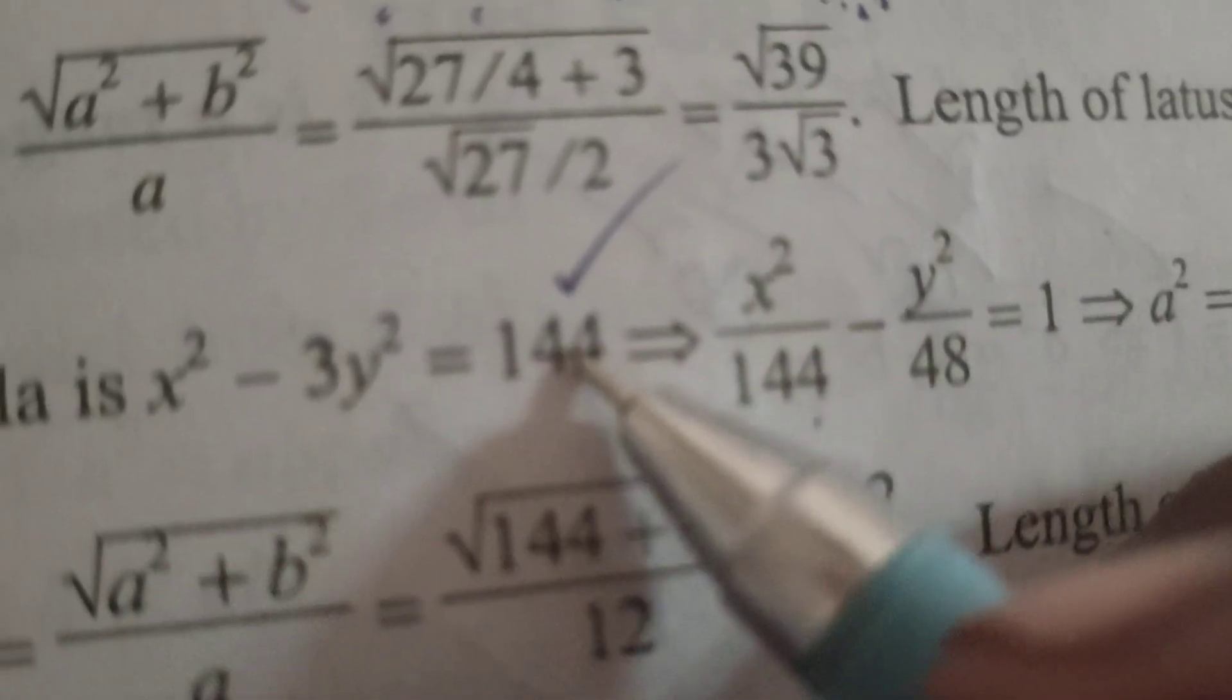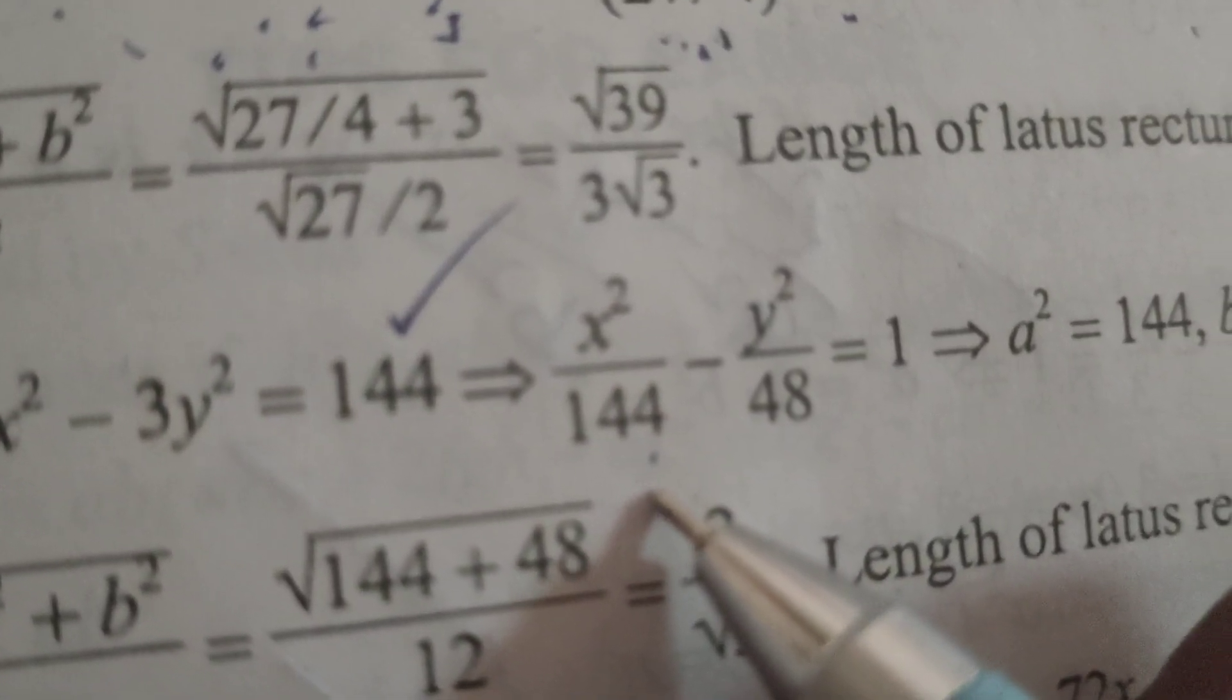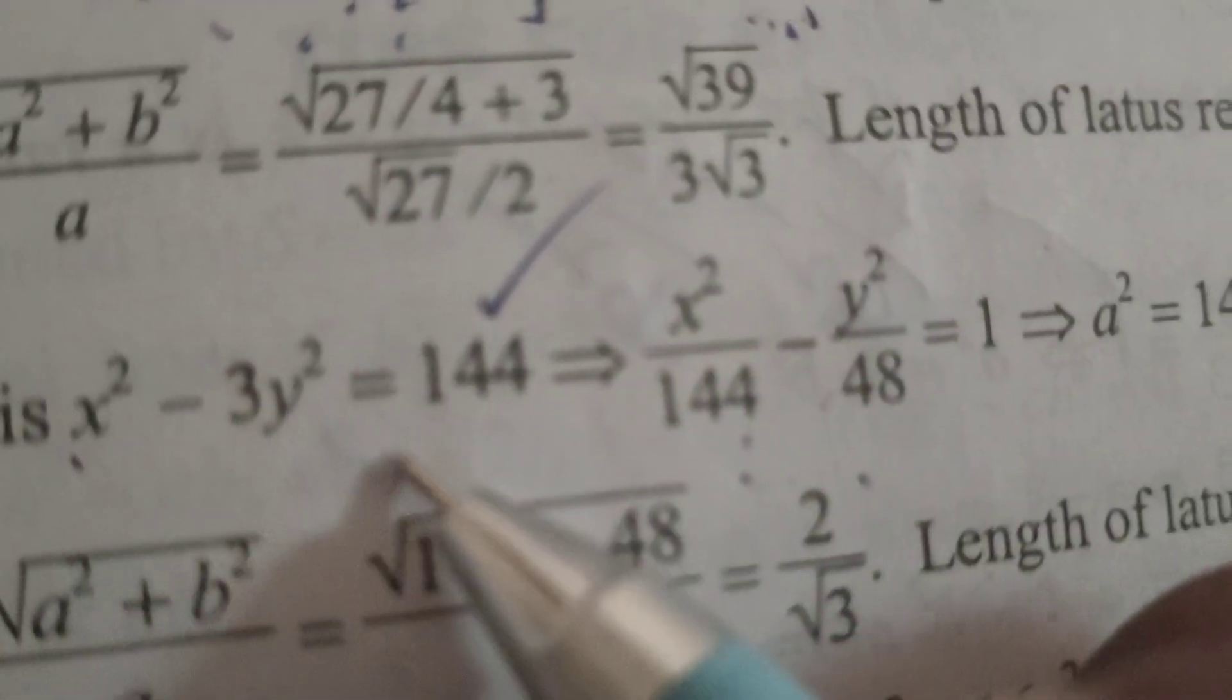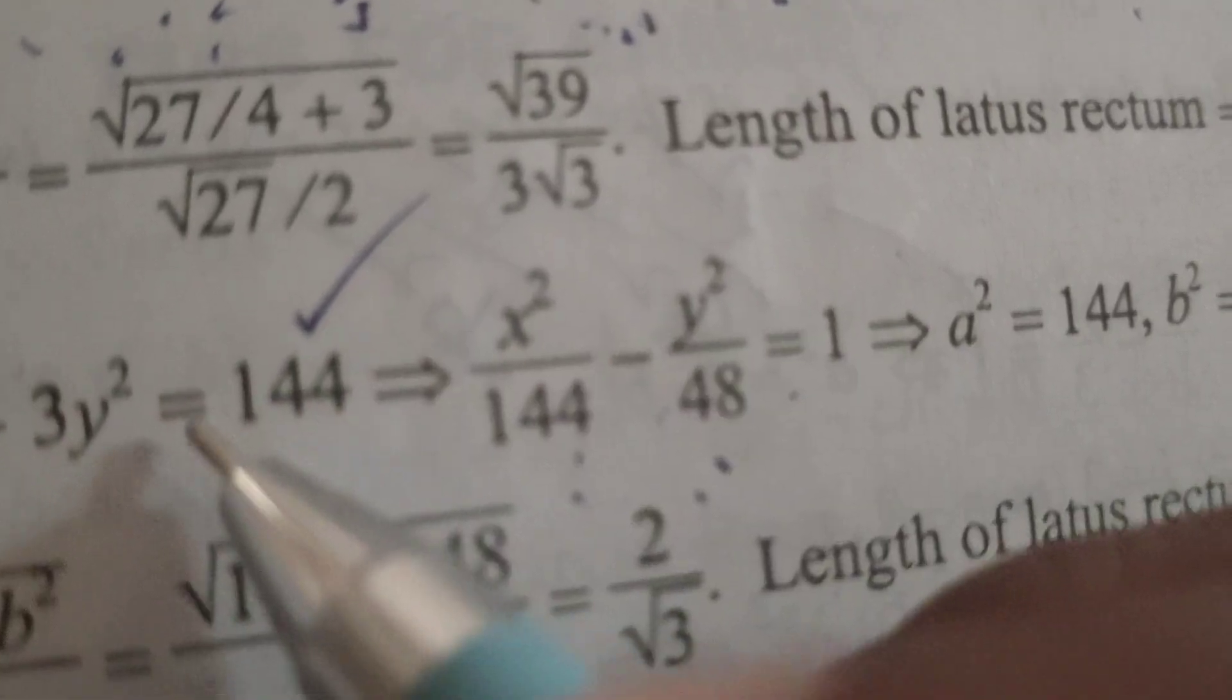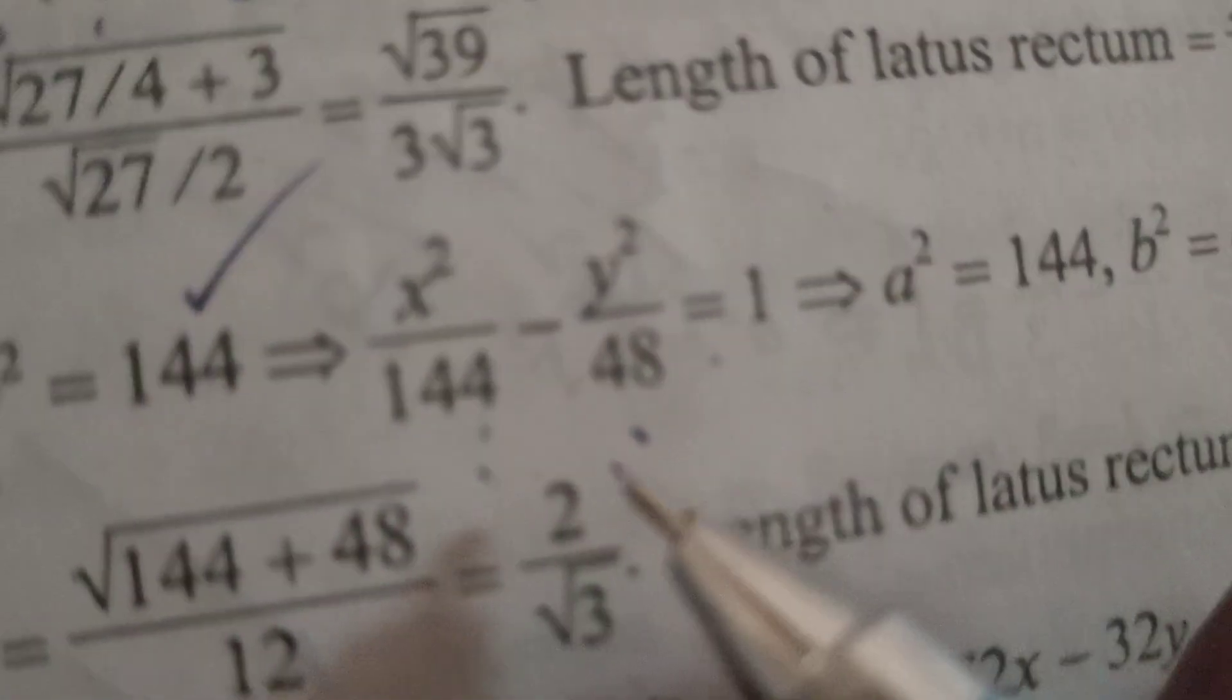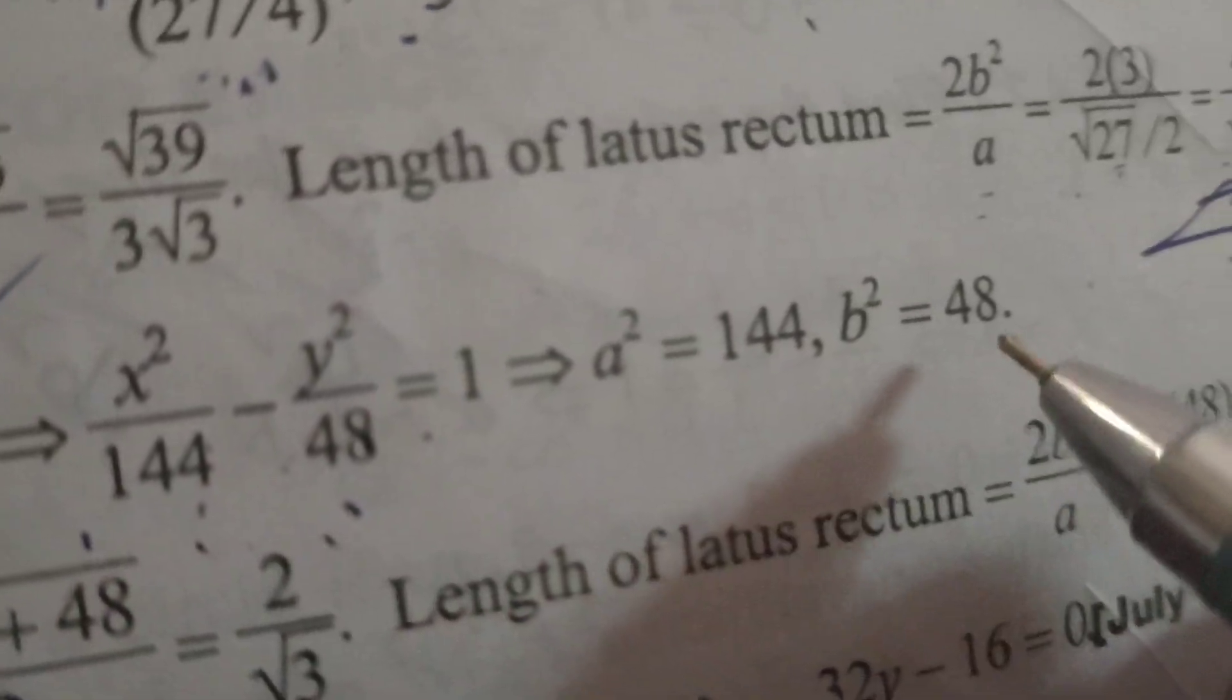Therefore x²/144 - y²/48 = 1. Comparing this equation to the standard form, a² = 144 and b² = 48.